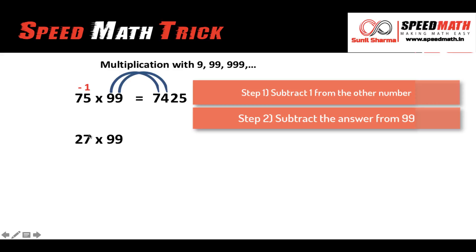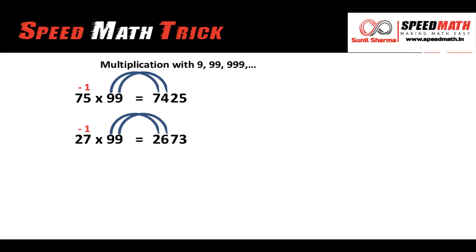Let's take another example: 27 multiplied by 99. The number of digits in 27 is 2 and 99 has two nines, so the condition is met. Step 1: 27 minus 1 gives you 26. Step 2: subtract 26 from 99 — 9 minus 2 is 7, and 9 minus 6 is 3. So the answer is 2673.